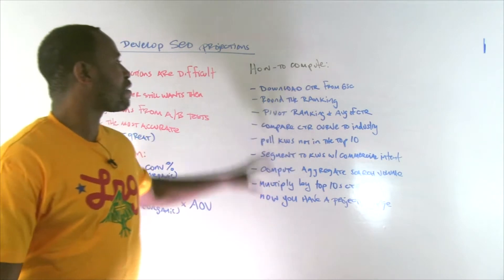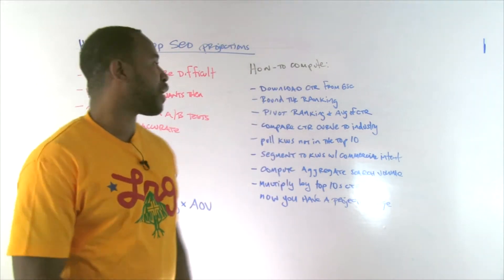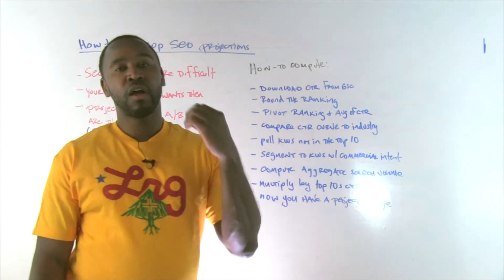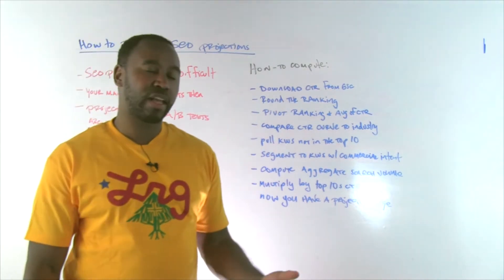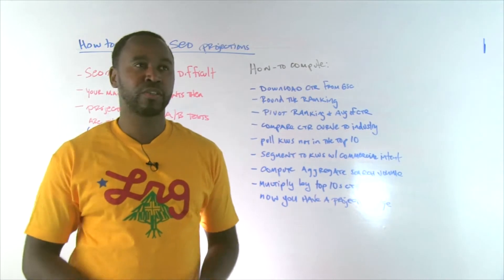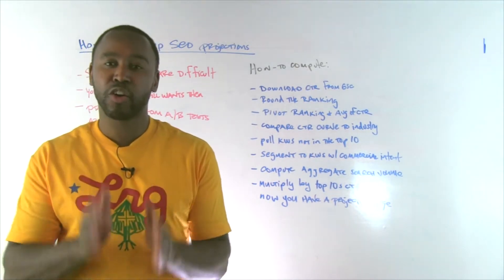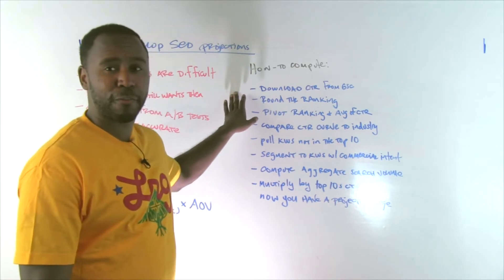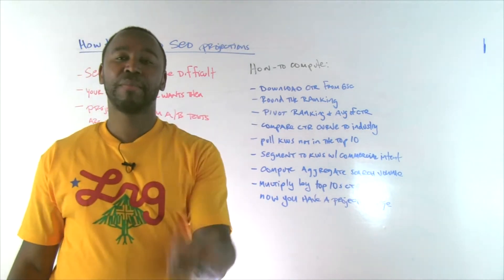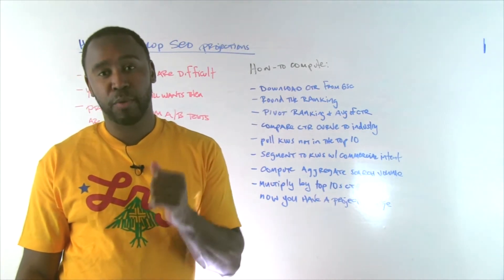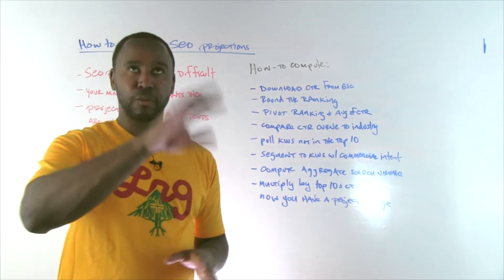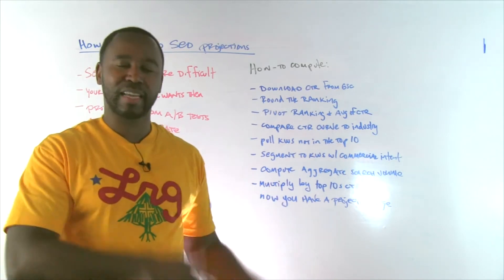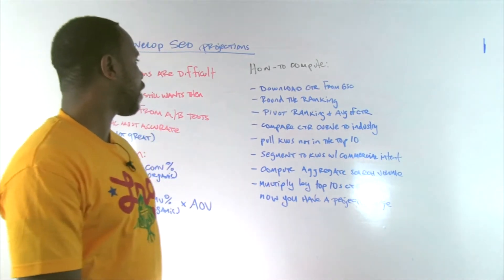So the way you compute this, the first thing you want to do, and this is the main caveat that I want to offer here, download your CTR data from Google Search Console. Don't use an anecdotal CTR that you read in a blog post because it's not necessarily how your website is performing. So you want to download CTR from Google Search Console, limiting it specifically to your unbranded terms. So the filter that you put in GSC on query, make sure you're saying does not contain whatever your brand is, right?